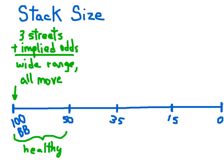As we move out of the healthy range, we move into what we'll call the medium stack range, when you have between 50 and 35 big blinds. Most poker tournaments are played in this range. After the first few levels, all the way up until the final table, most players have between 50 and 35 big blinds. It's a critical stack size to know how to play if you want to be a good tournament player.